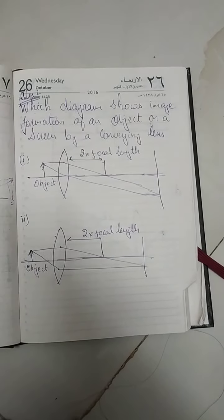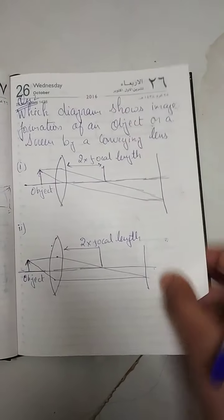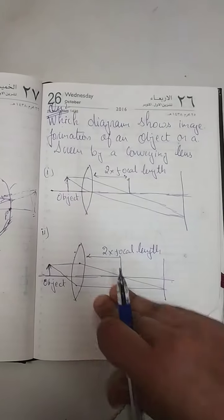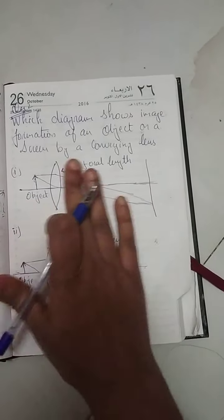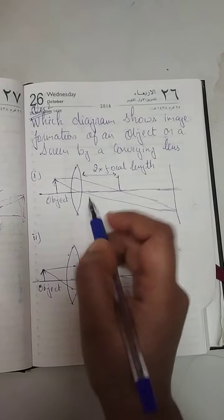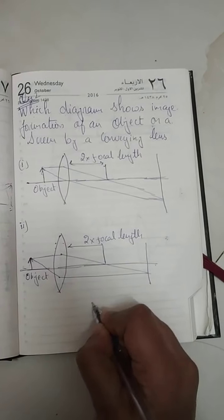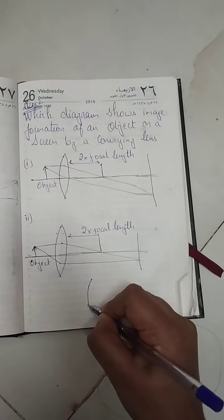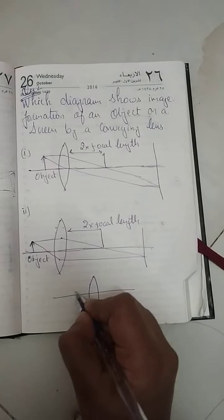They have given us four options. Carefully notice the first diagram. If this is your convex lens and an object is placed here, there are two focal lengths - f1 at this side, and on the other side f2.